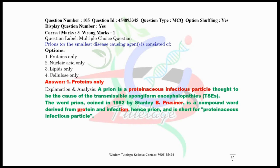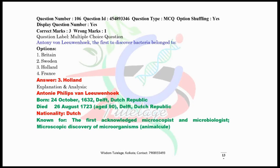The name 'prion' was coined by Stanley B. Prusiner in the year 1892. The name actually comes from 'protein' and 'infection' — combining the 'prot' from protein and 'ion' from infection — and the combination of the two gives us 'prion'.